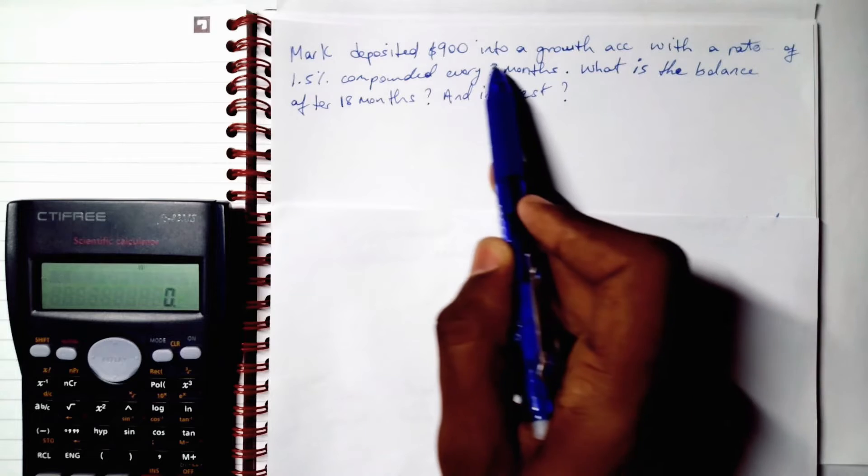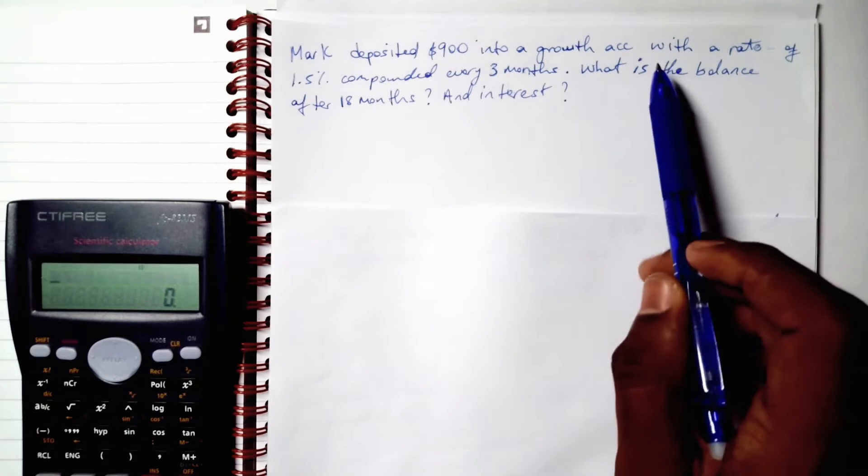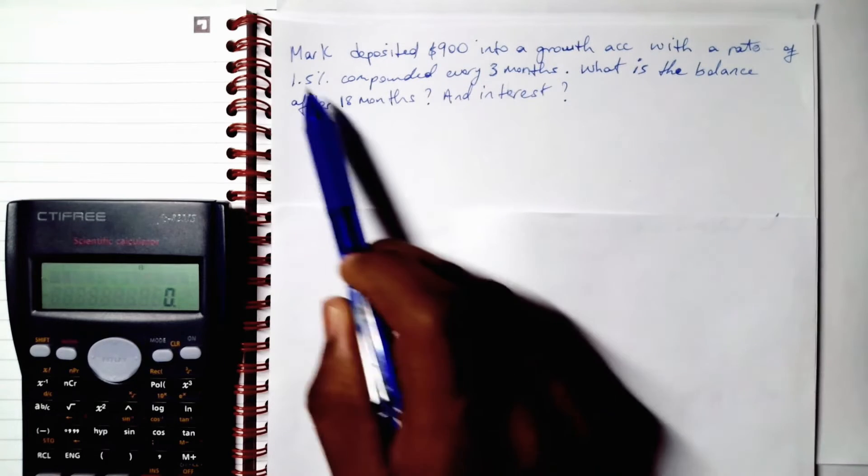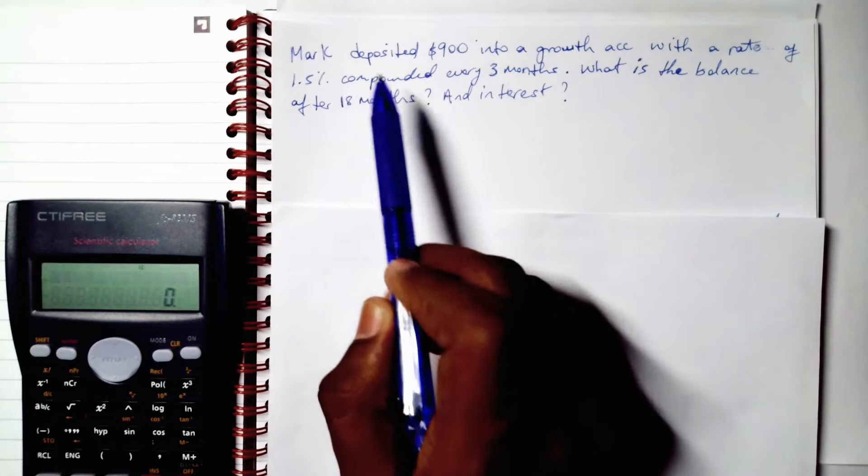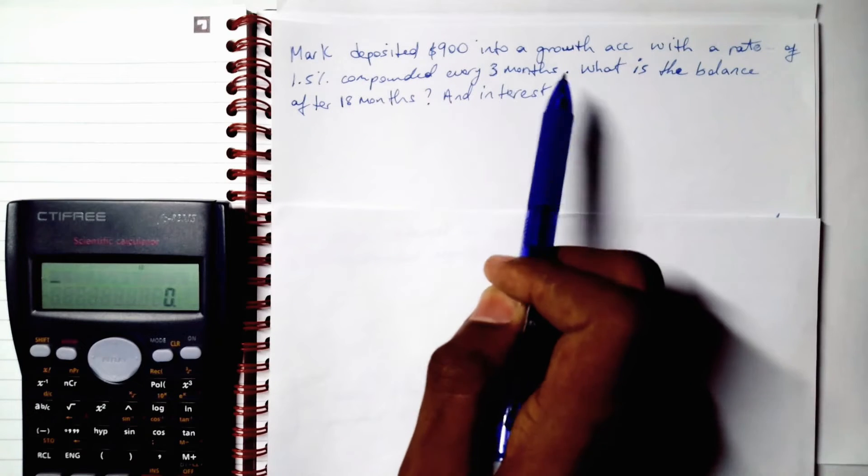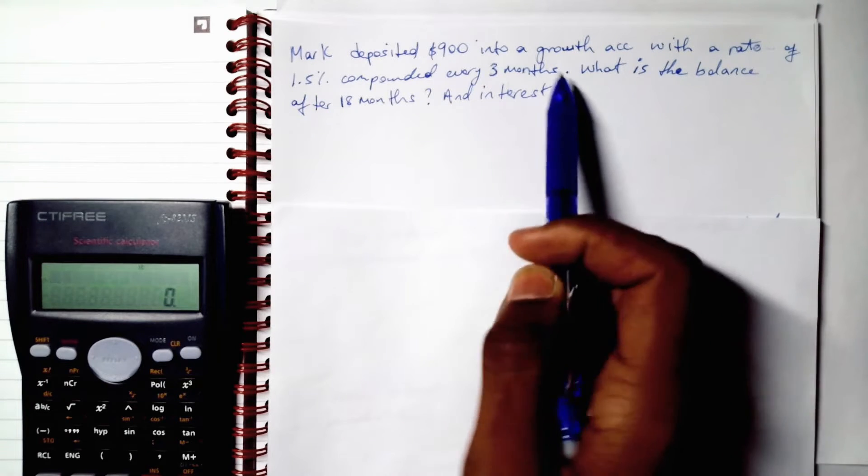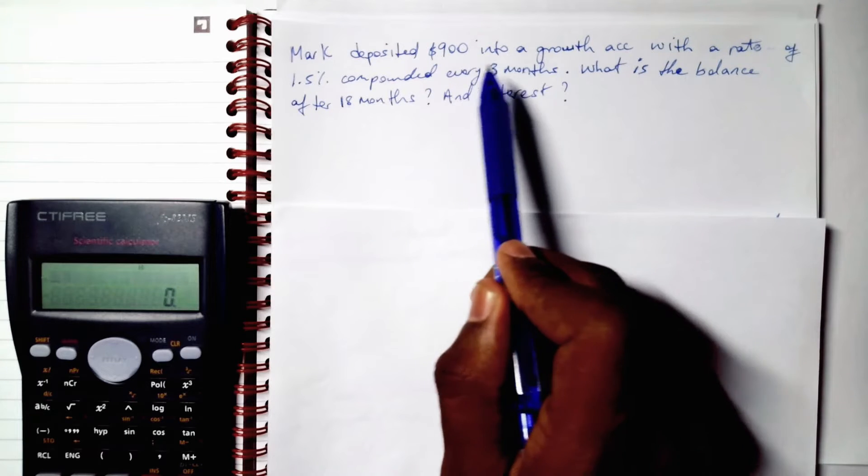All right. Let's go back to this part here. Rate of 1.5% compounded every three months. Yes. It's compounded every three months.